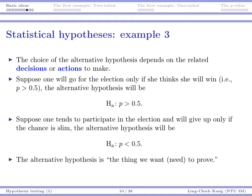On the other hand, suppose the default position is that you just want to participate in the election. If there is no one stopping you, you will go. Then there is a possibility to stop you — as long as someone can tell you that the winning rate is very small. As long as there is strong evidence showing that P is less than 50%, then you will stop. In that case, your task becomes proving that P is small, and the alternative hypothesis would be P less than 50%. So again, both directions can be fine, as long as it is something you want to prove — something you want strong evidence to support — and it is the opposite of your null hypothesis.